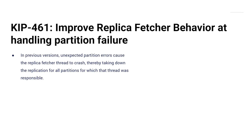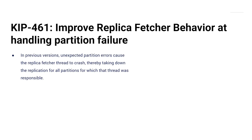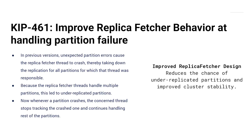KIP 461 improves the replica fetcher. In a broker, any given broker is the leader for some partitions and the follower for others. For those follower partitions, the replica fetcher is actively fetching from whoever the leader is. There's a thread pool of configurable size that determines how many threads run replica fetchers. Historically, if one of those replica fetchers fails, all of the replicas it was responsible for go away — you might have five threads handling a thousand partitions, so one failure could lose replication on 200 of them. This KIP improves it so that when one partition fails, only that partition fails and all other replicas continue normally.